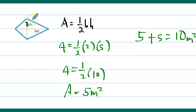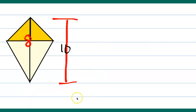Let's try to solve it in a different scenario. Let's have another example. This is a kite where this line over here is eight, and from one end to the other end is ten.